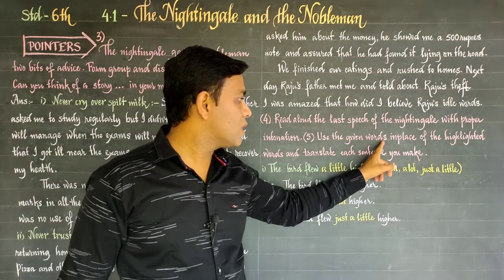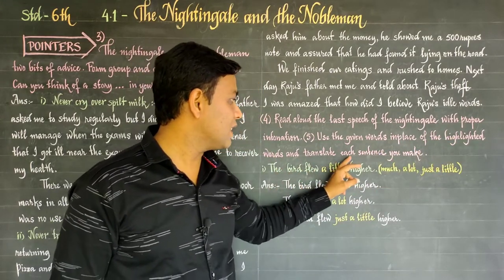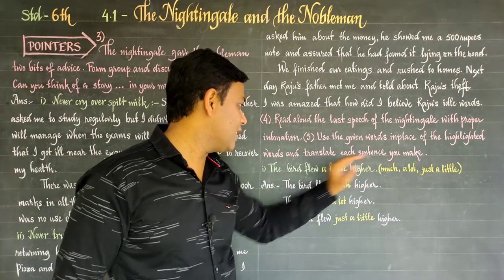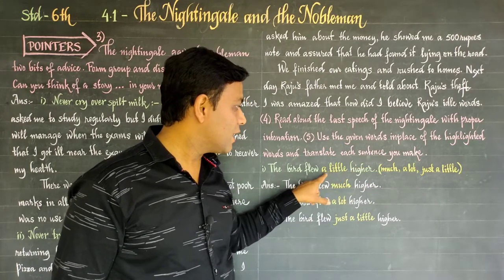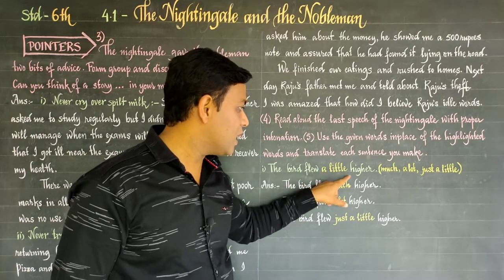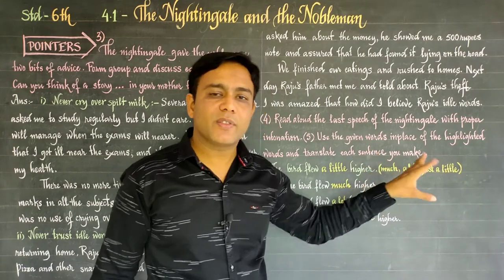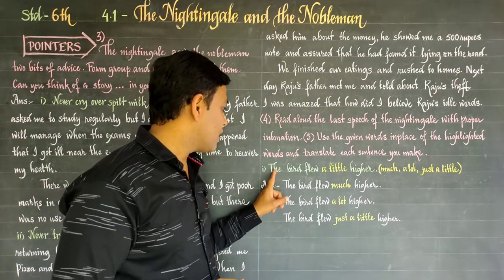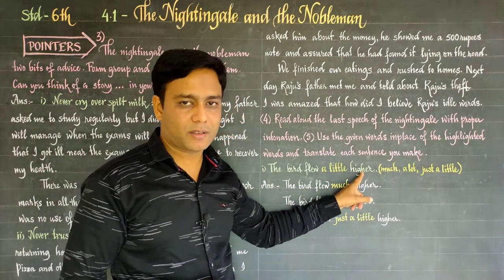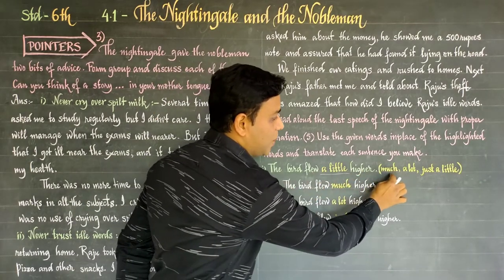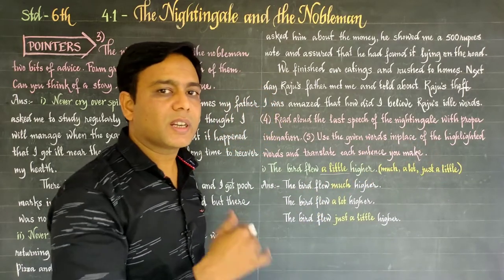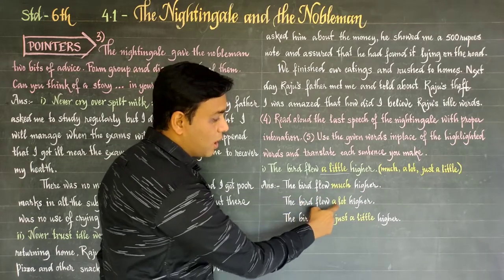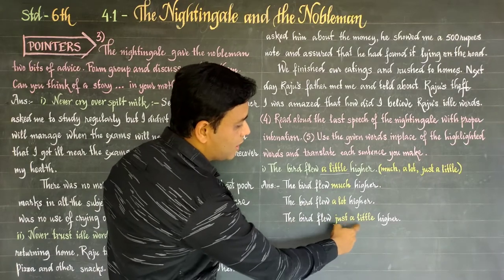This is the fifth question: use the given words in place of highlighted words and translate each sentence you make. The highlighted word is 'a little.' We replace it with 'much,' 'a lot,' and 'just a little.' The original sentence was: the bird flew a little higher. New sentences: the bird flew much higher; the bird flew a lot higher; the bird flew just a little higher.